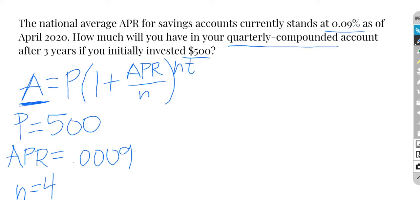And then lastly, we have t, which is the number of years that we're going to keep it in the account, which is three. So now that we've identified all of our variables, we can just plug it all in and see what we get.